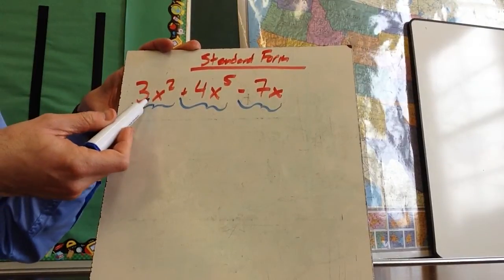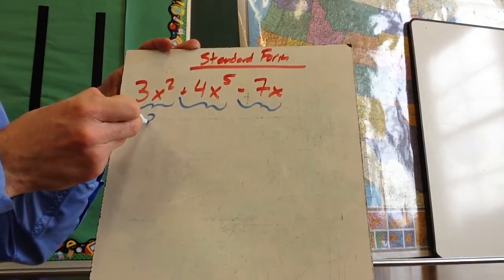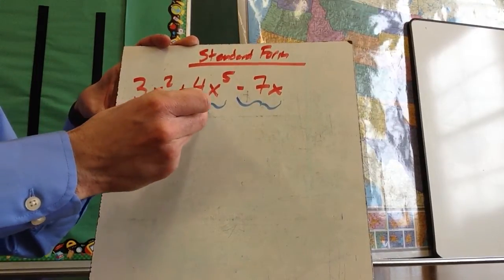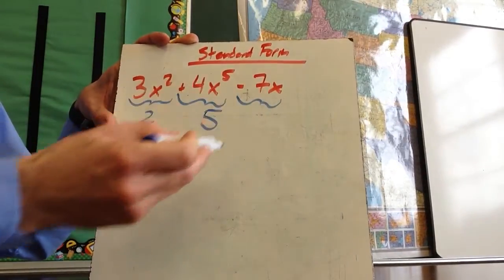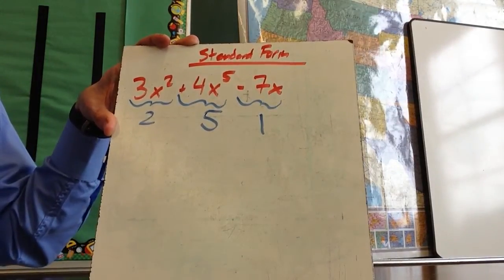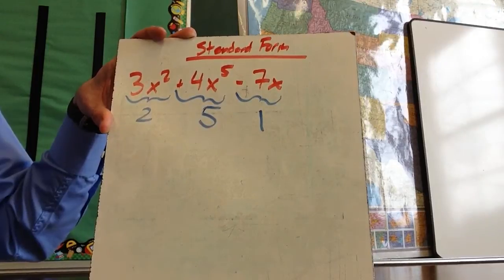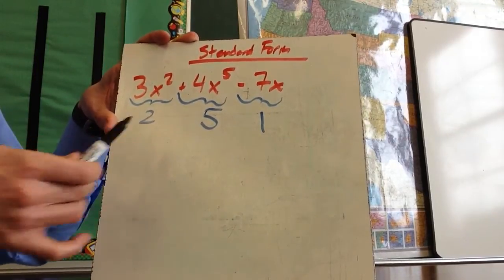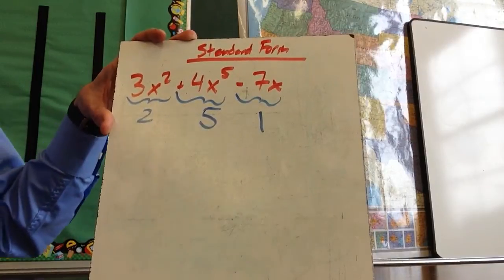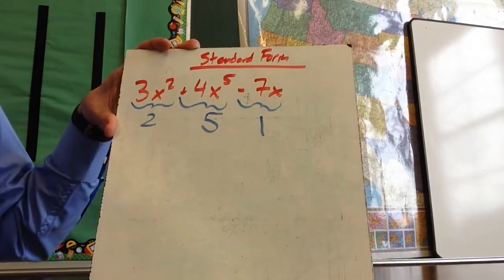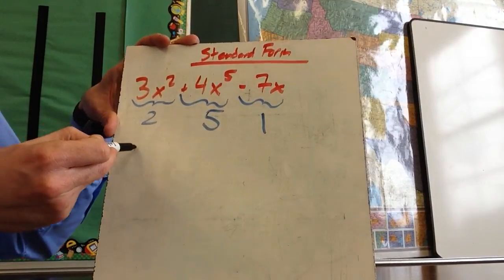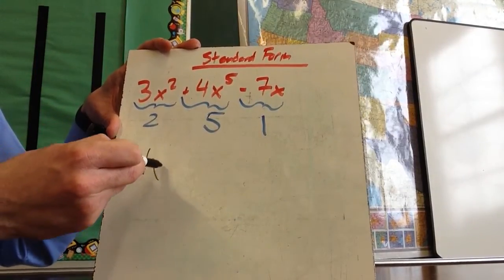I've got 3x squared, and that is to the second, because that's the two. 4x to the fifth is to the fifth, and negative 7x is to the first. So I'm going to put them in order from highest degree to lowest degree, meaning that this 4x to the fifth is going to be first. Keep in mind that this sign is tied to the number in front of the variable.